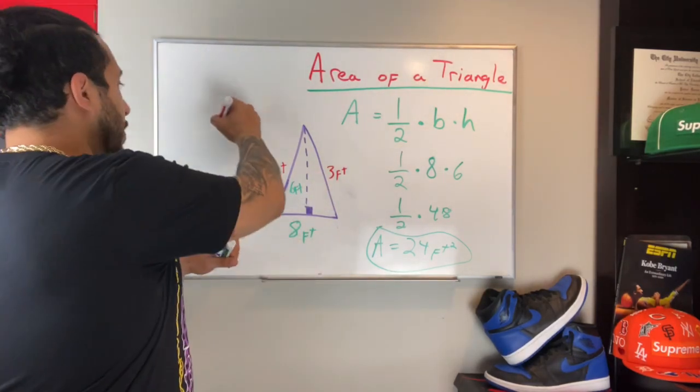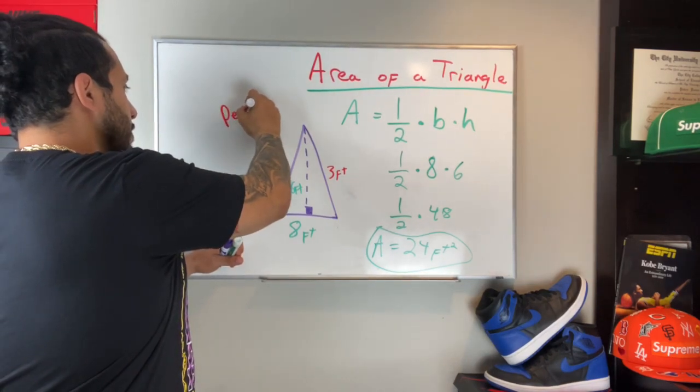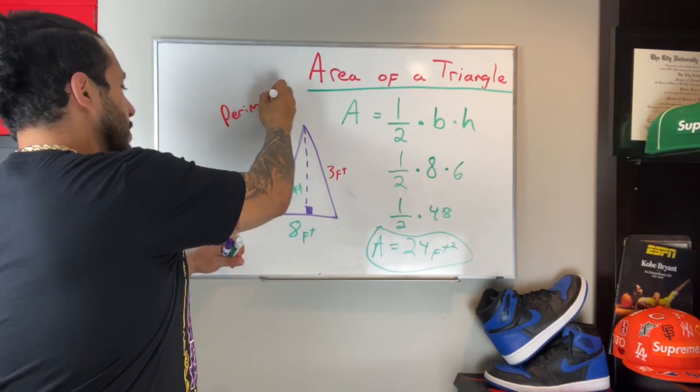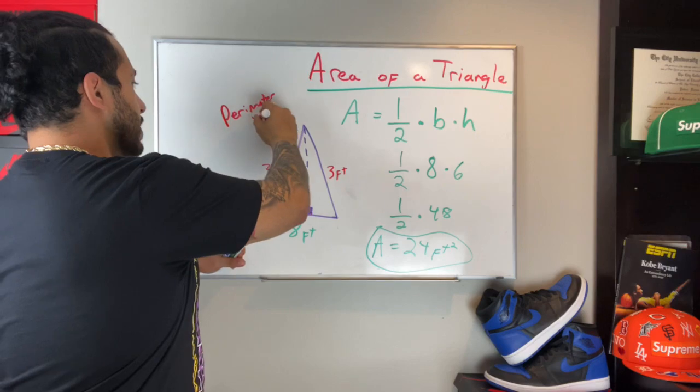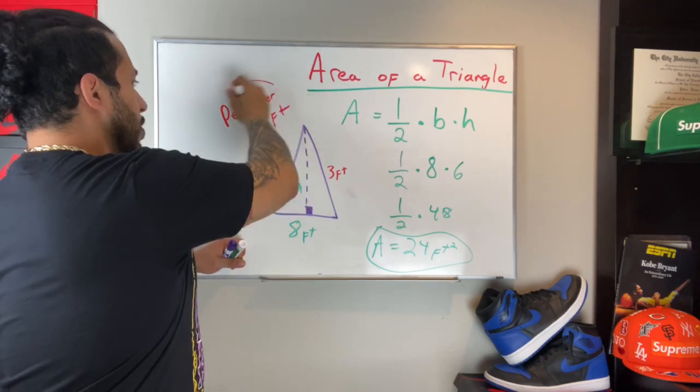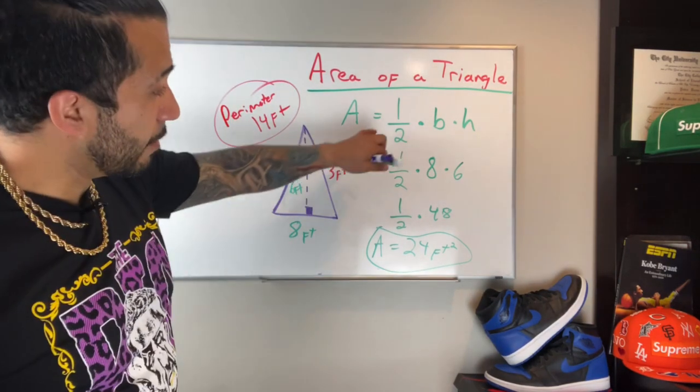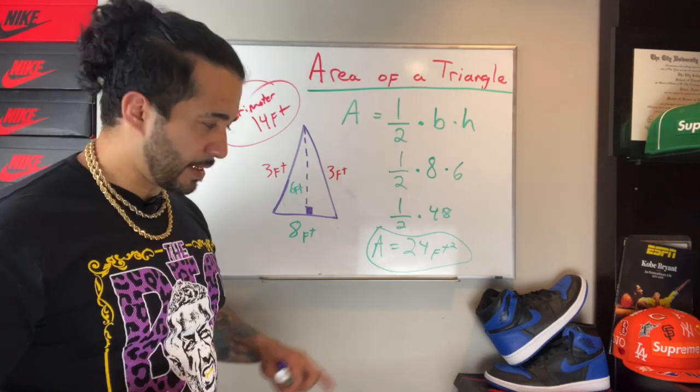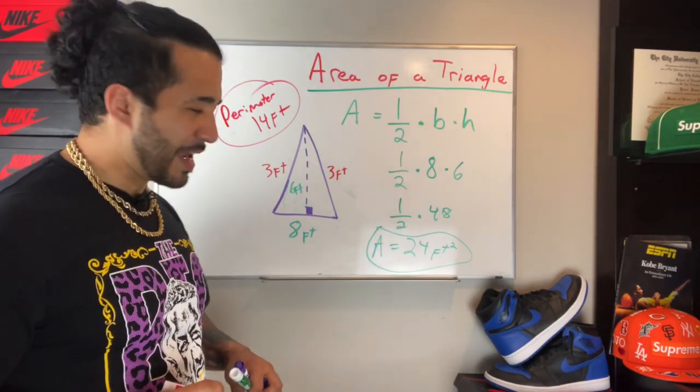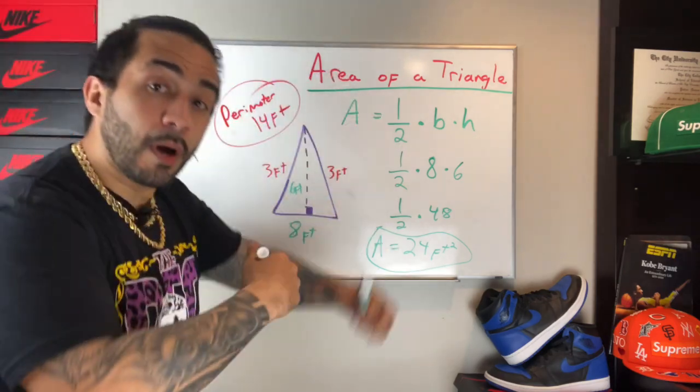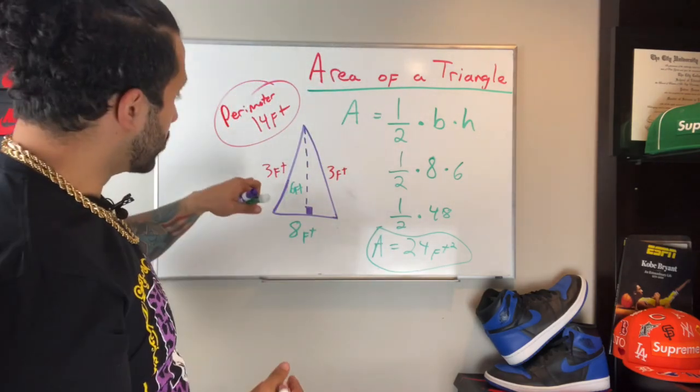So just to recap: area is one half times the base times the height. In this instance, 24 feet squared. And the perimeter is the sum of all the shapes - three plus three plus three plus eight is 14.